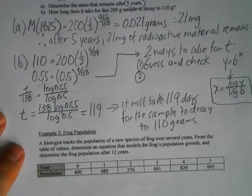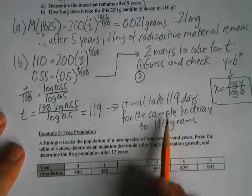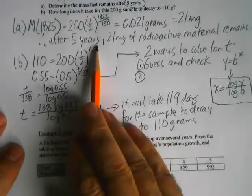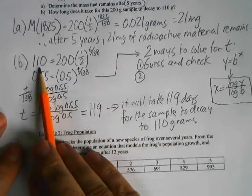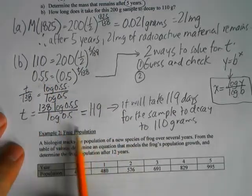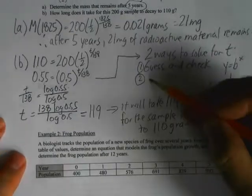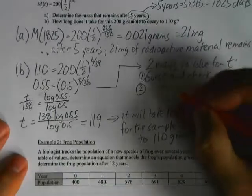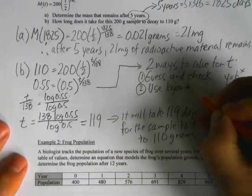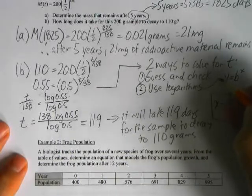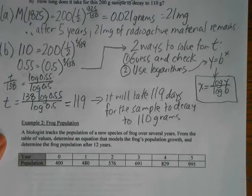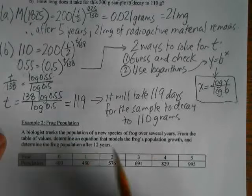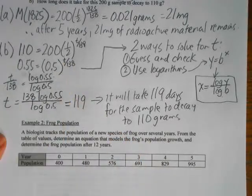You can verify the answer by plugging T equals 119 back into the equation — it should give you something very close to 110. Use logarithms when you're solving for the exponent or part of it; if you're solving for anything else, you don't need them.